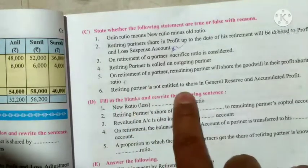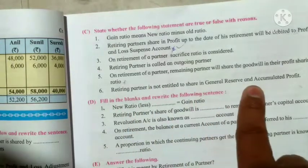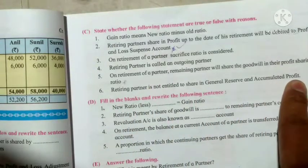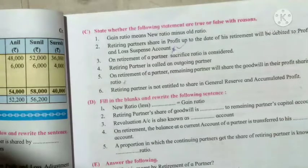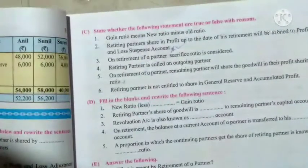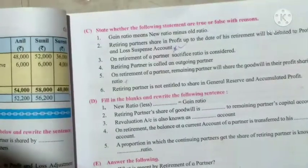Number 6: retiring partner is entitled to share in general reserve as well as accumulated profit. This statement is false.